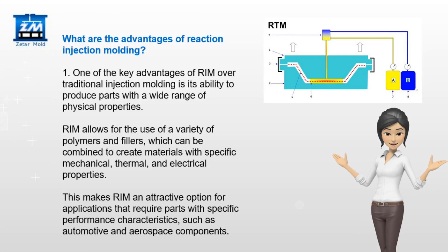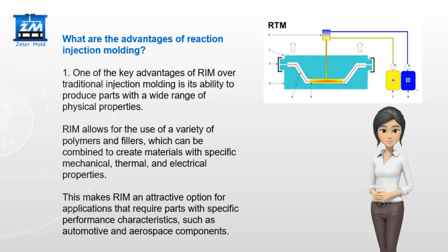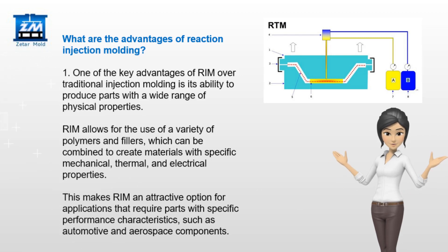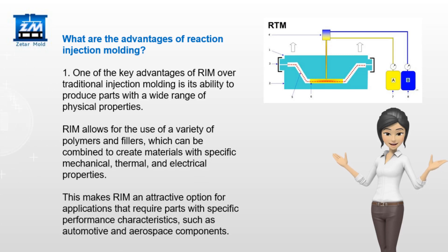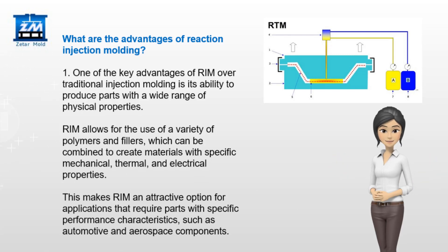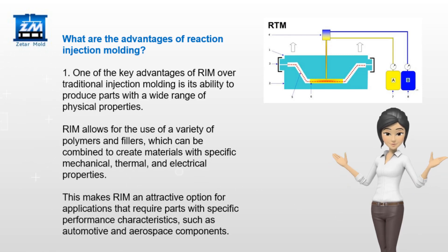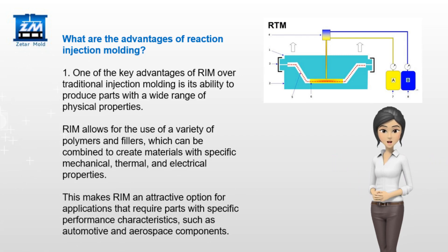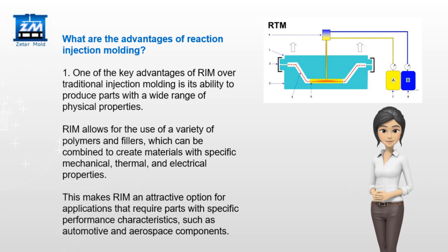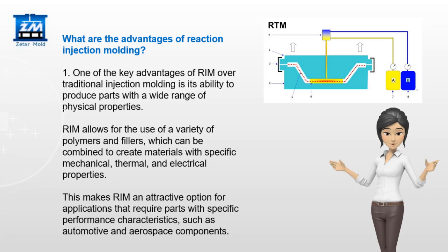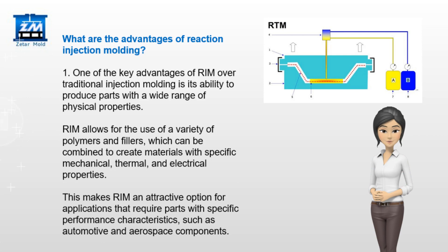What are the advantages of Reaction Injection Molding? One key advantage of RIM over traditional injection molding is its ability to produce parts with a wide range of physical properties. RIM allows for the use of a variety of polymers and fillers, which can be combined to create materials with specific mechanical, thermal, and electrical properties. This makes RIM an attractive option for applications such as automotive and aerospace components.